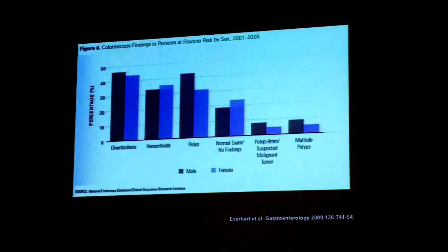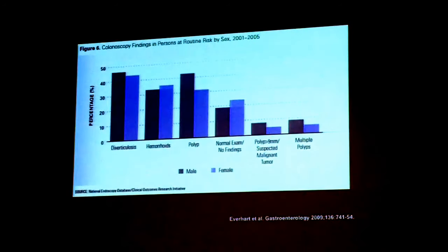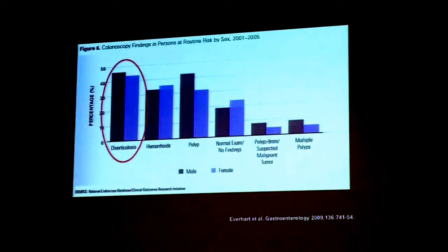If you look at epidemiologic data, this is data from the National Endoscopy Database, which comes out of Oregon Health Sciences University. It's something called CORI — the Clinical Autonomous Research Initiative — which is really one of the largest endoscopic databases in the world. In this particular study, it's just a simple descriptive study looking at what are the most common things that we find when we do regular screening colonoscopies. The most common thing that we find in men and women, even more common than hemorrhoids, more common than polyps, and considerably more common than a normal exam with no findings, is diverticulosis.